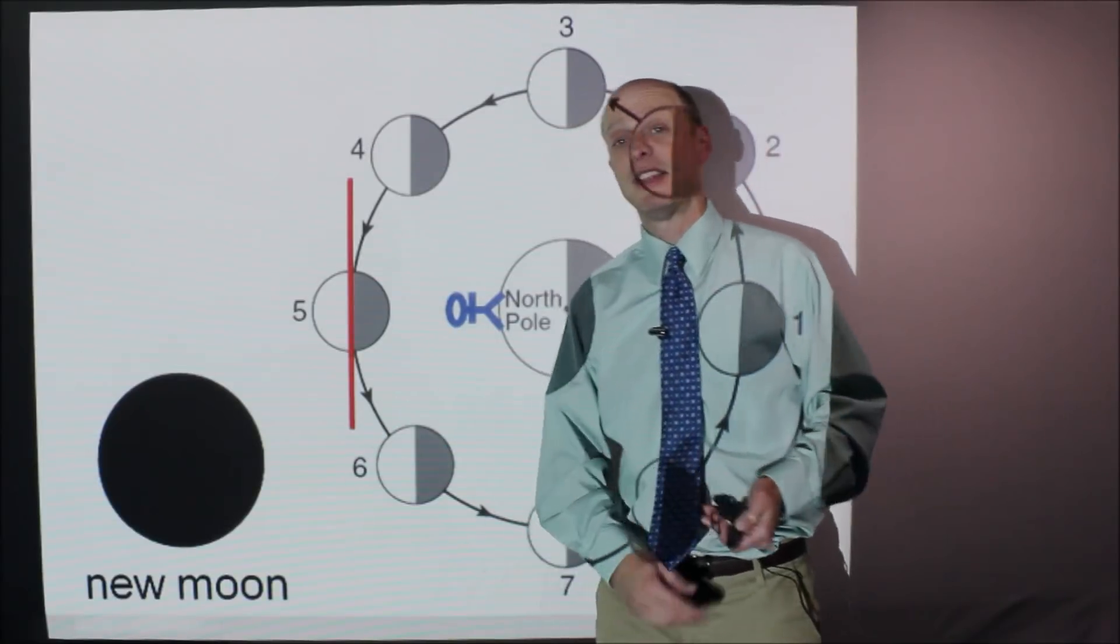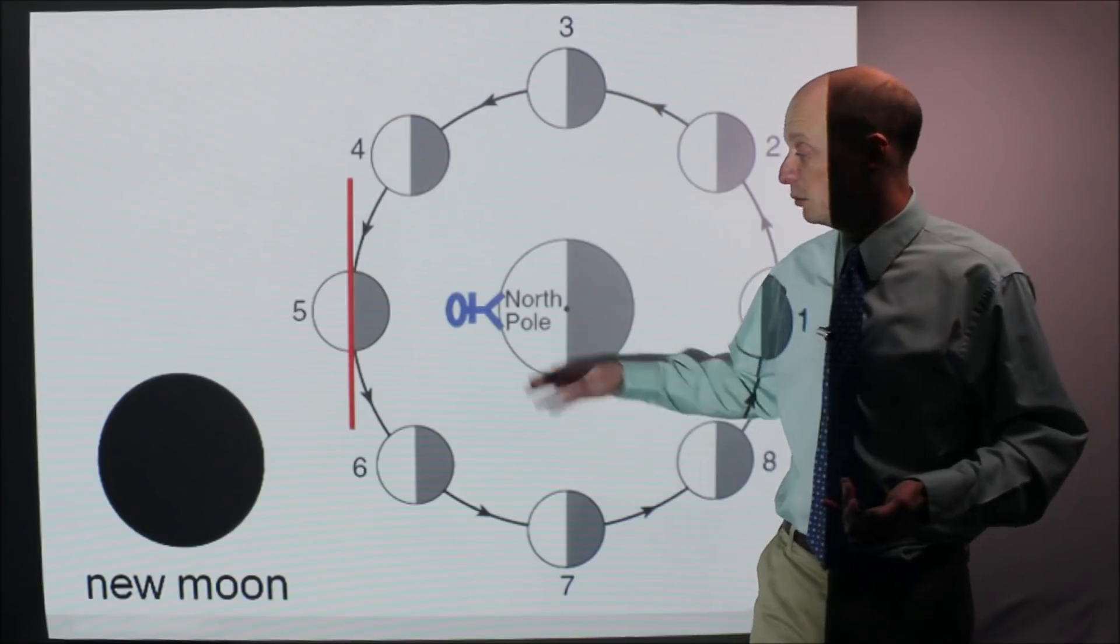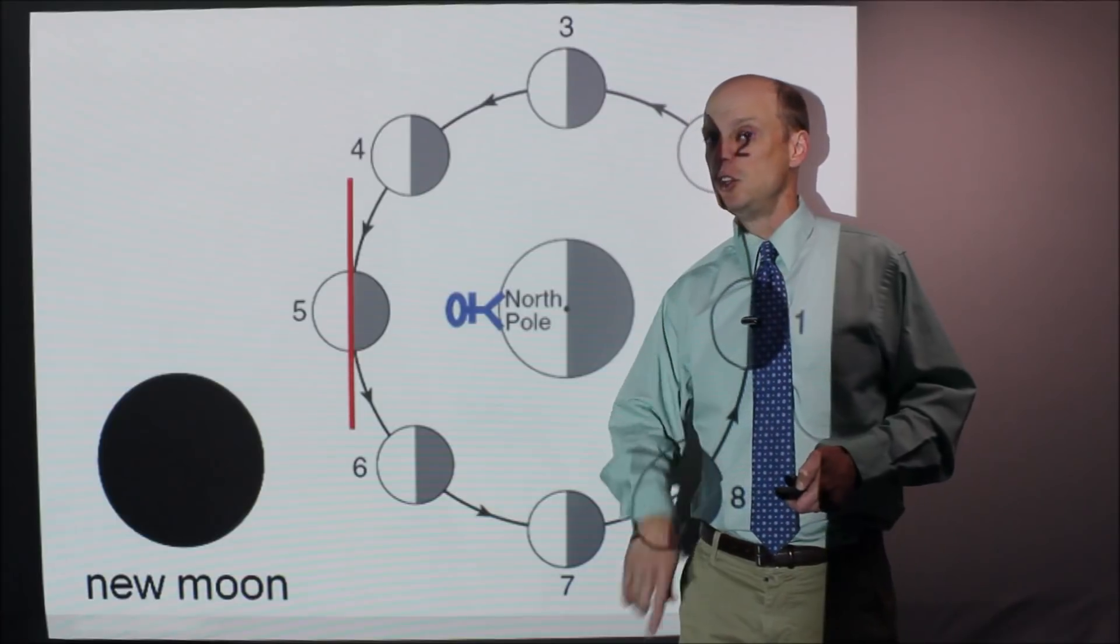Therefore, it would look like that, and that's called a new moon. Basically, it's no moon. You don't see a moon. The moon is out in the middle of the day. You don't see it, and at nighttime, there's no moon in the sky. New moon.